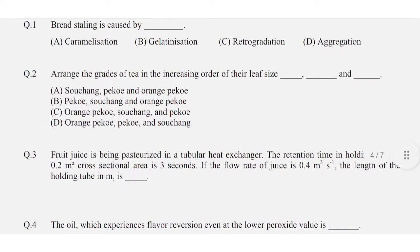Question number two: arrange the grades of tea in increasing order of their leaf size. The correct option is A: so Chang, Pekoe, and Orange Pekoe.